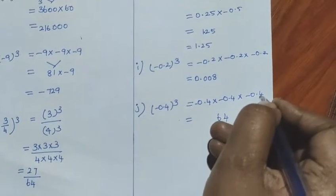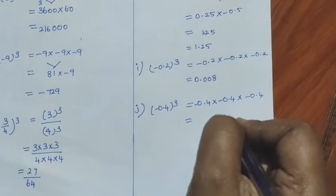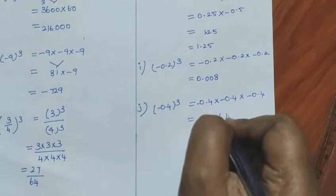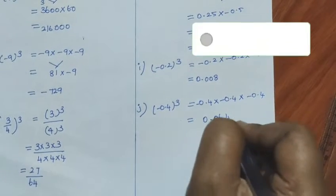How many digits — 3 digits. Already 2 digits, so add one more zero. Answer: minus 0.008.